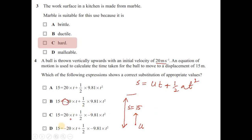Options with a negative initial velocity are eliminated. The only remaining question is the sign of acceleration. This is free-fall motion so we use −9.81 ms⁻². The correct substitution is S = ut + ½(−9.81)t², so the answer is option C.